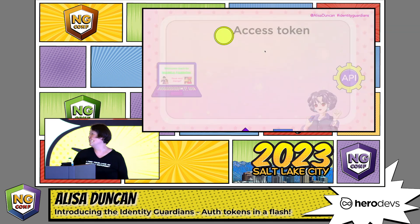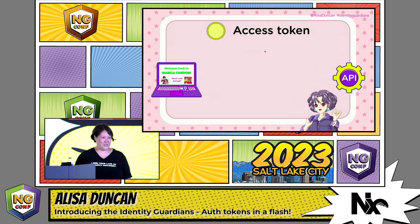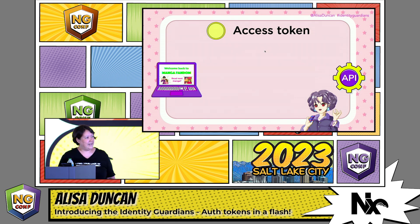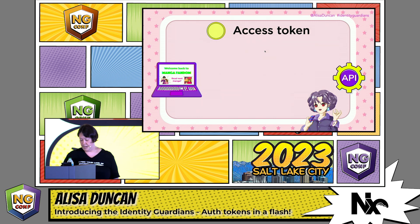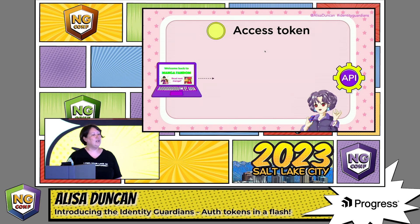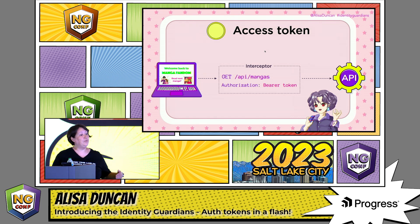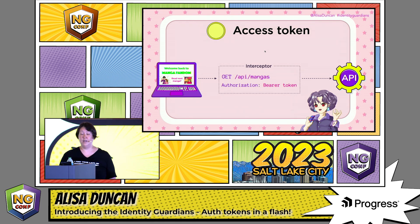Starting first with the access token guardian. The access token handles authorization — it allows us to get access to data and to perform actions. A prime way to use the access token is in an interceptor, where you'll add it to the authorization header to outgoing API calls.